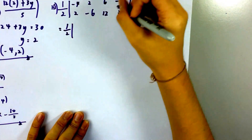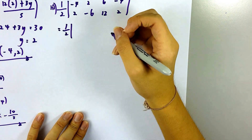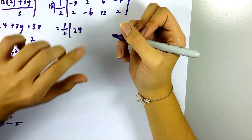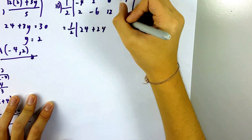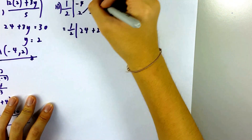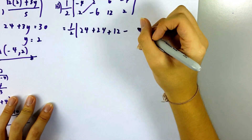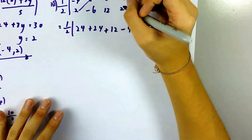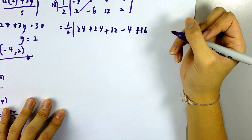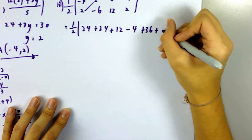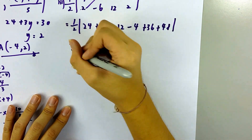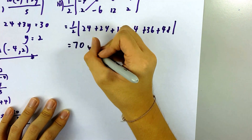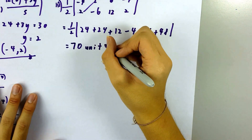You cross-multiply: going down is plus, going up is minus. Negative 4 times negative 6 equals positive 24, then plus 24, then 6 times 2 is 12. Minus: 2 times 2 is 4, and minus negative 6 times 6 is negative 36, but you minus it so it becomes positive 36. The last term gives plus 48. Taking the modulus and multiplying by one half, the answer is 70 square units.